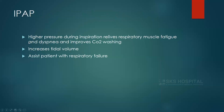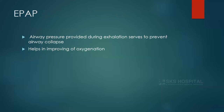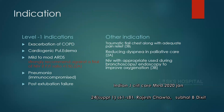IPAP — the pressure during inspiration — relieves respiratory muscle fatigue and dyspnea, improves CO2 washing, and helps increase tidal volume in patients with respiratory failure. EPAP — the airway pressure during exhalation — serves to prevent airway collapse; it is essentially PEEP and helps improve oxygenation. The level 1 indications for BiPAP are exacerbation of COPD and cardiogenic pulmonary edema — both CPAP and BiPAP are level 1A evidence. When there is CO2 buildup and hypercapnia, BiPAP is the preferred choice over CPAP.